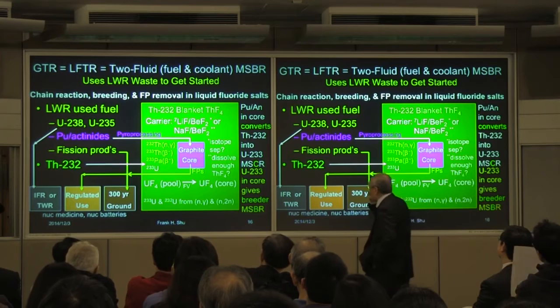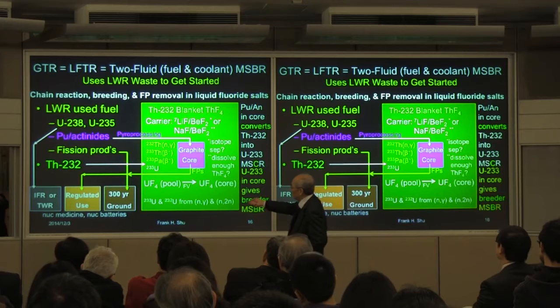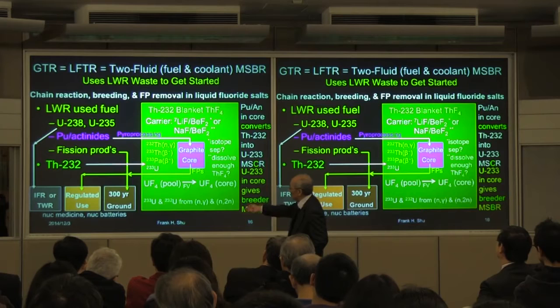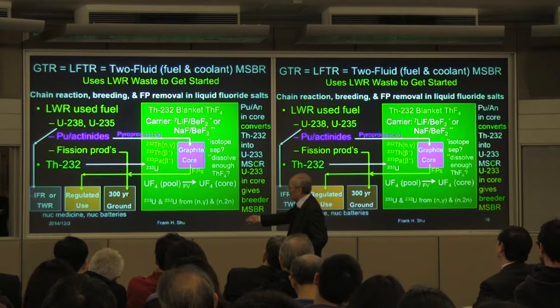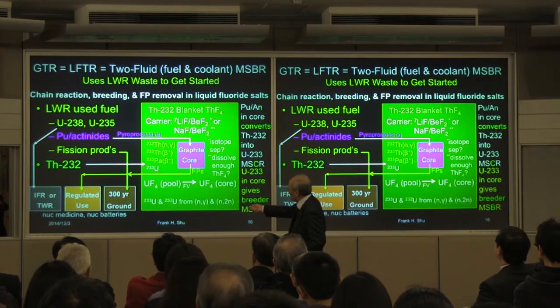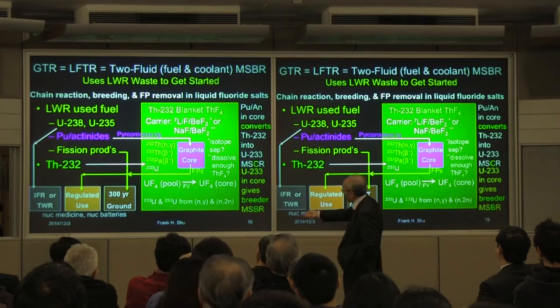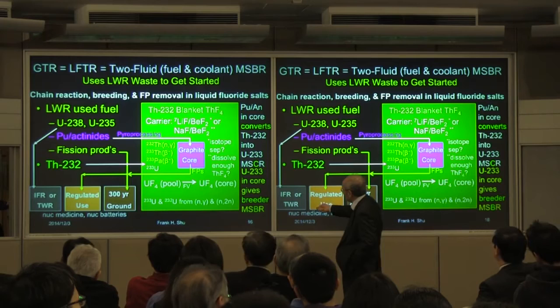You start with nuclear waste from light water reactors: uranium-238 and uranium-235 that didn't get transformed or didn't burn. You take that out and separate it chemically, then give it to people who want to build fast reactors — the integral fast reactor, or Bill Gates' traveling wave reactor. The leftover plutonium and higher actinides can be used via pyro processing as a fuel — it has excess neutrons. If you surround that with thorium in the form of a salt, the excess neutrons will come out of the core.